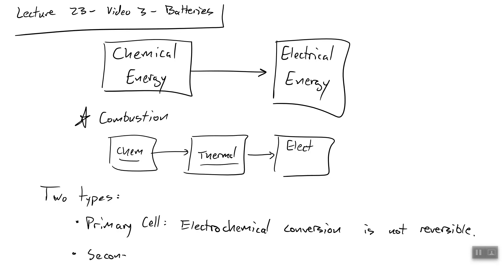A secondary cell, you guessed it, is an electrochemical conversion that is reversible. We can actually run the process in reverse and convert electrical energy back into chemical energy. We then have a cycle we can repeat over and over. Not for an infinite number of cycles—the second law makes sure nothing works that way—but instead for a large number of cycles.